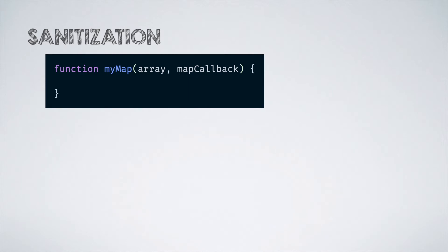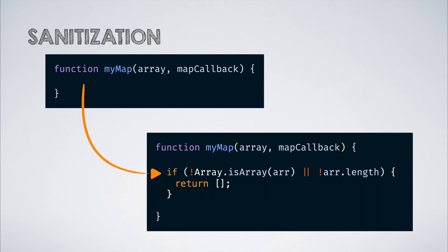The first thing that we need to do is input sanitization. Thus, we check whether the first argument supplied is an array and also whether it has one or more elements. If not, we just return an empty array from our map implementation.